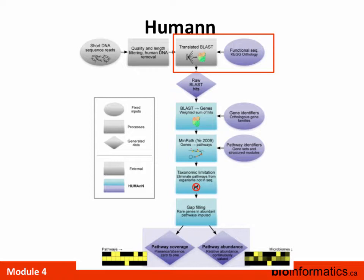HUMAnN was used by the Human Microbiome Project and has been applied to many other sample types — soil, ocean — so don't feel it's only for human samples. It's based on the KEGG database on the back end. It's a large pipeline and I'm going to walk through each step — it may get more technical, but I want to show you what it's doing in the background beyond just taking the top hit.